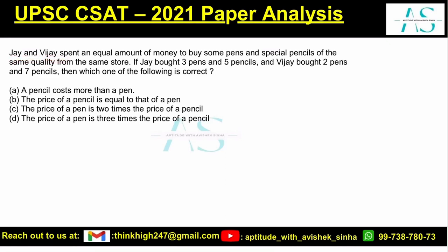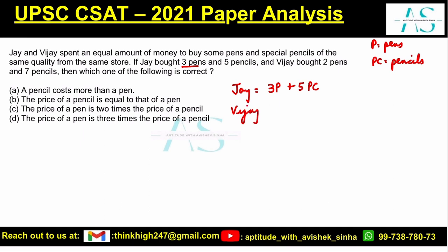Jay and Vijay spent an equal amount of money to buy some pens and special pencils of the same quality from the same store. Jay has bought three pens — where P denotes pens and PC denotes pencils — and five pencils. Vijay buys two pens and seven pencils. We know Jay and Vijay spent an equal amount of money.